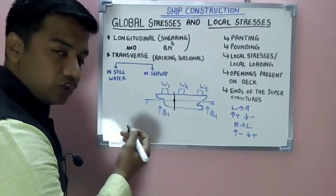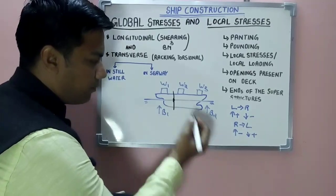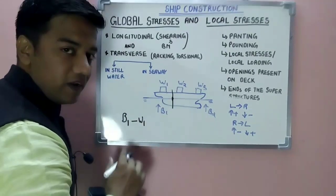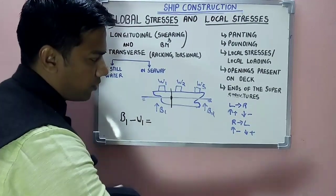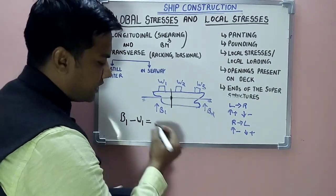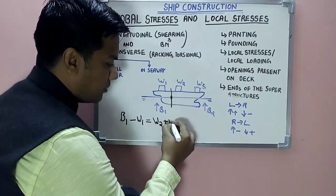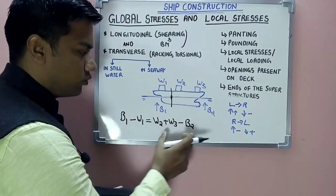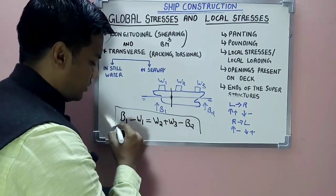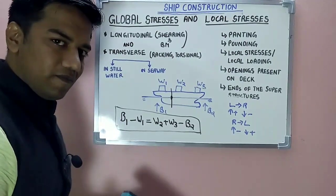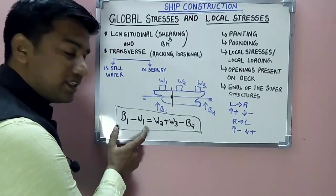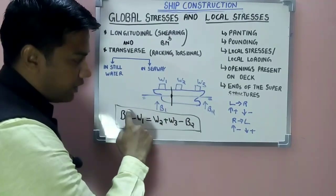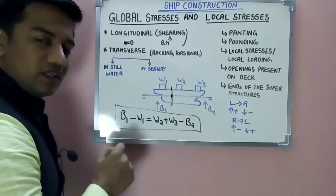From left to right, the shearing force acting towards this point is: b1 is positive, so b1 minus w1 is the shearing force from left to right. This equals the forces from right to left, where upward forces are taken as negative: w2 plus w3 minus b2. So this equation from left equals this from right. Shearing force is the algebraic sum of vertical forces acting towards one side of that point.